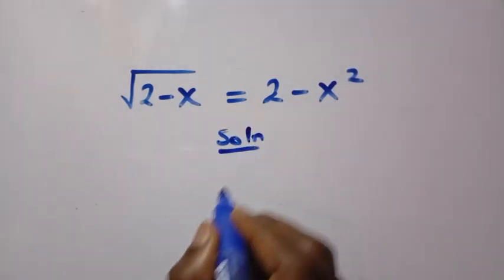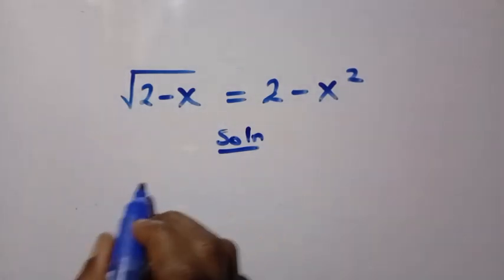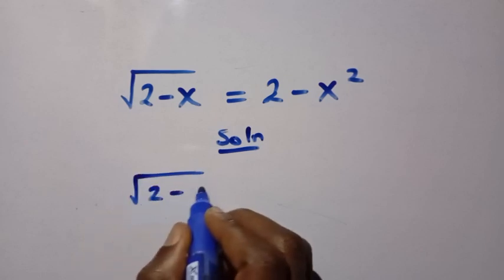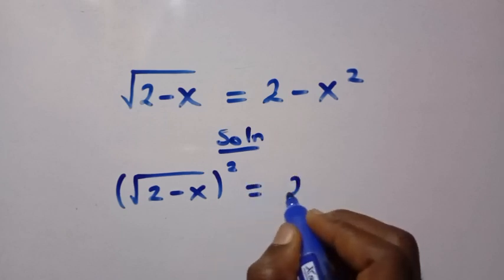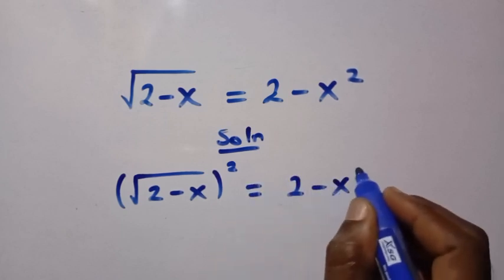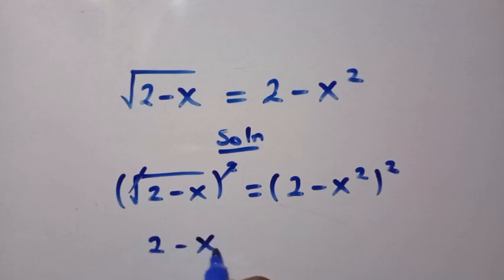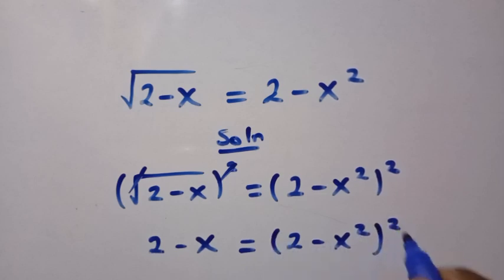So the first thing is we consider the solution here. Let's take the square of both sides. So by squaring both sides we are going to have the square root of (2 minus x) all squared equals (2 minus x squared) all squared. Then this square and square root cancel, so we have 2 minus x equals (2 minus x squared) all squared.